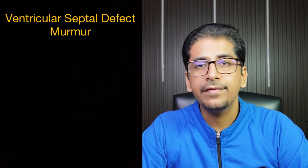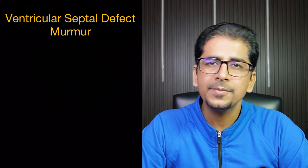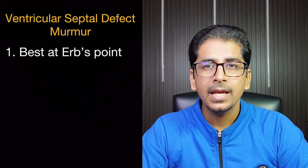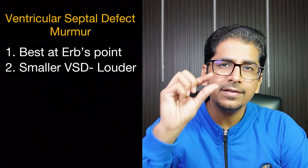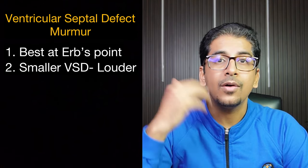The third example of pan-systolic murmur is VSD — ventricular septal defect. This is best heard at Erb's point, and importantly, the smaller the VSD, the louder the murmur. That covers all the pan-systolic murmurs.